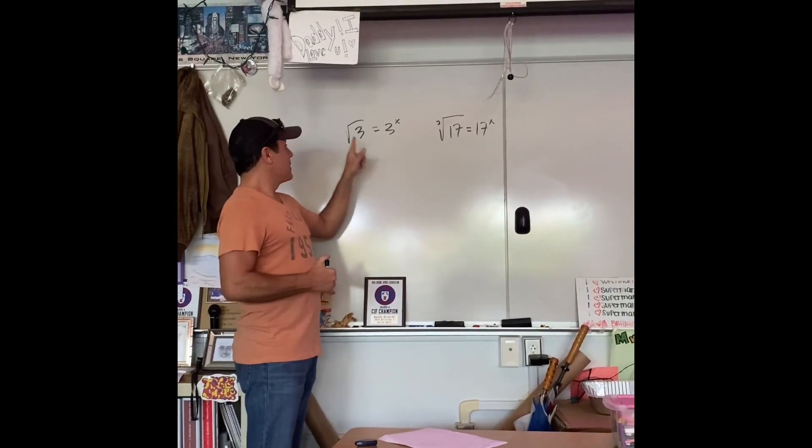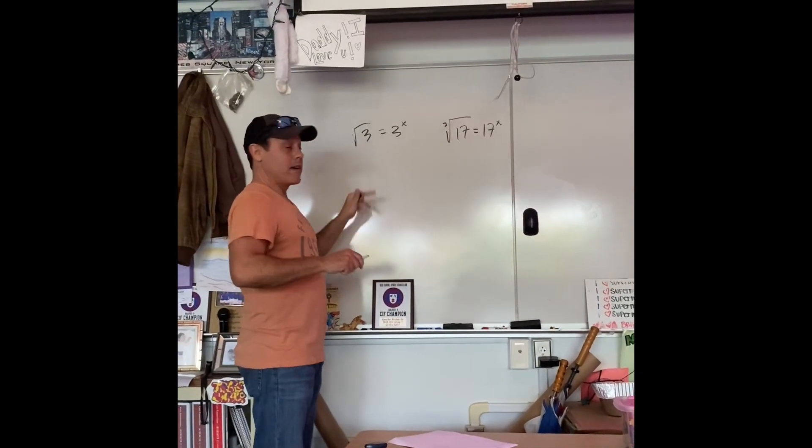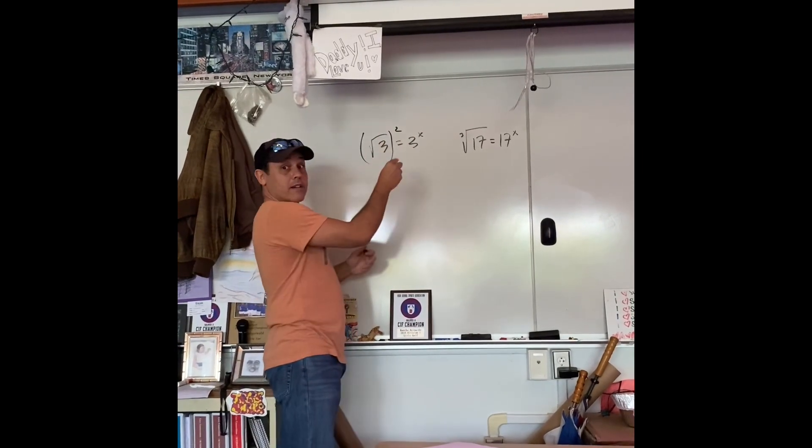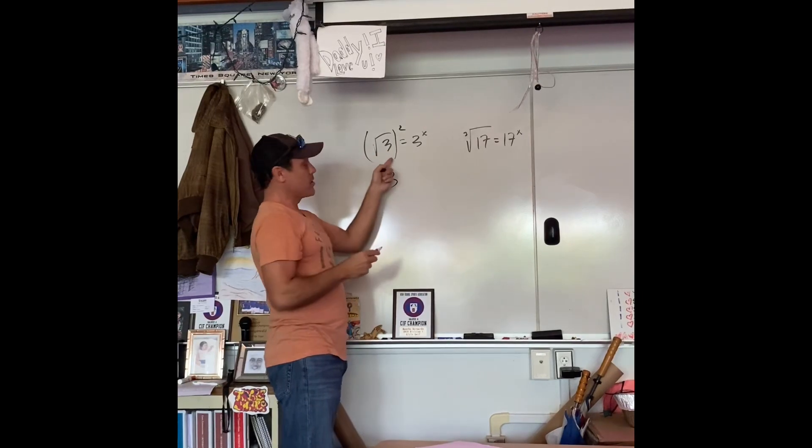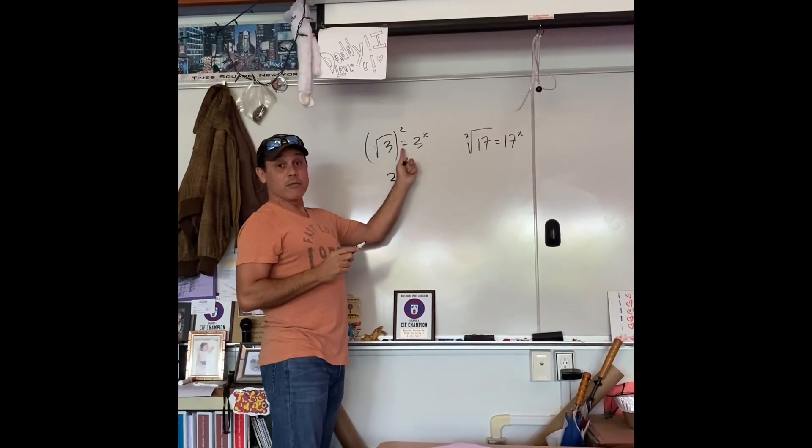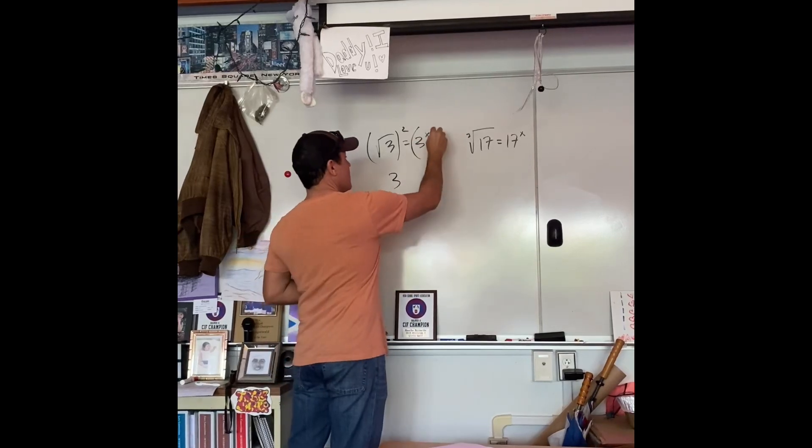Okay, you remember, to get rid of a square root, you've got to square that, right? You remember squaring a square root gets rid of this square. Well, if you're going to square root this side, you've got to be equal about and square this side. So, let's go ahead and do that.